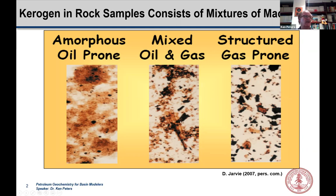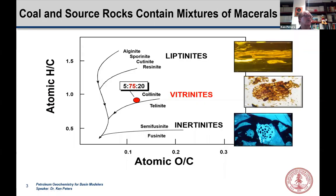Of course we can have any mixture of different types of macerals in a source rock. Here's a mixed source rock containing both amorphous and structured organic matter. This little piece of wood shows cellular structure at low maturity — we would call that huminite, and eventually, once reflectance values are more than about 0.2%, we would call it vitrinite. So let's look at the way these different types of organic matter were originally characterized. This is called a Van Krevelen diagram. It plots the atomic H-to-C versus atomic O-to-C ratio of the kerogen isolated from different types of source rocks.